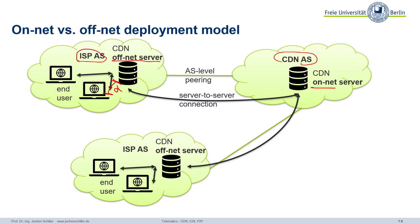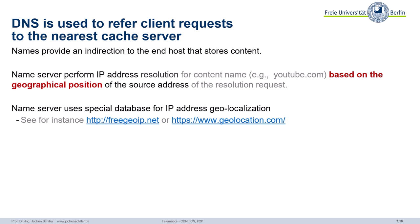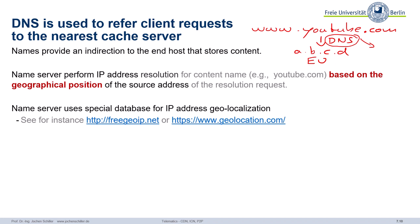But how do we find the closest cache location? You can use DNS to redirect the client's request. So you want to access, for example, youtube.com, and it's the job of DNS to tell you an IP address. You can tweak DNS so that depending on your location, DNS returns different addresses — maybe in the EU you get one address, but if you're in the US, you get a completely different address. The name server performs address resolution for certain content based on the geographical position of the source address.